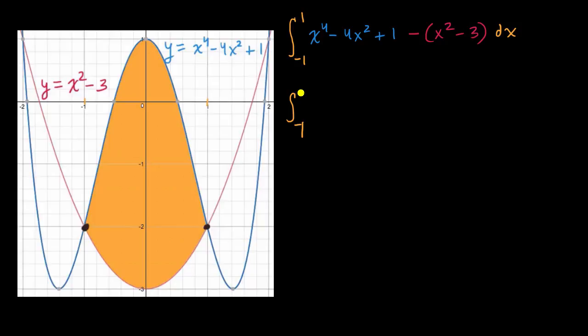So we have the integral from negative one to one. And so we have x to the fourth, x to the fourth. And now we have minus four x squared. And then when you distribute this negative sign, you're going to subtract another x squared. So you're going to have minus five x squared. And then you have plus one, and then you're going to subtract a negative three. So it's going to be one plus three. So it's going to be plus four dx.